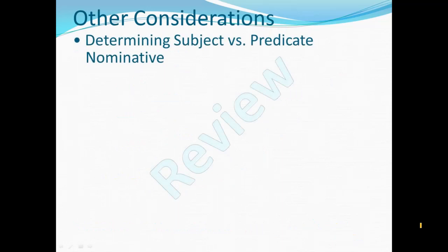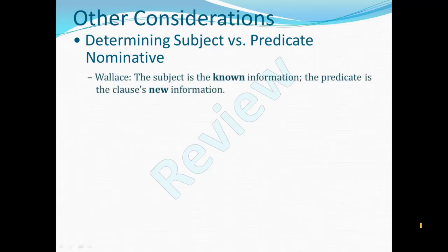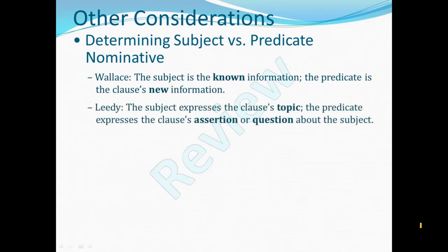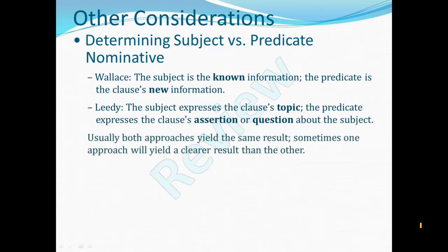I gave a couple of different approaches to determining subject versus predicate nominative. In a sentence containing both an explicit subject and a predicate nominative, obviously both words will be in the nominative case, so you can't determine which is which based on case. Wallace's approach is that the subject presents the known information and the predicate is the clause's new information. My approach is that the subject expresses the clause's topic, and the predicate expresses the clause's assertion — or if interrogative, the predicate asks the question about the subject. Both approaches usually yield the same result. I also presented some mechanical guidance; if you need that, go back to part five.